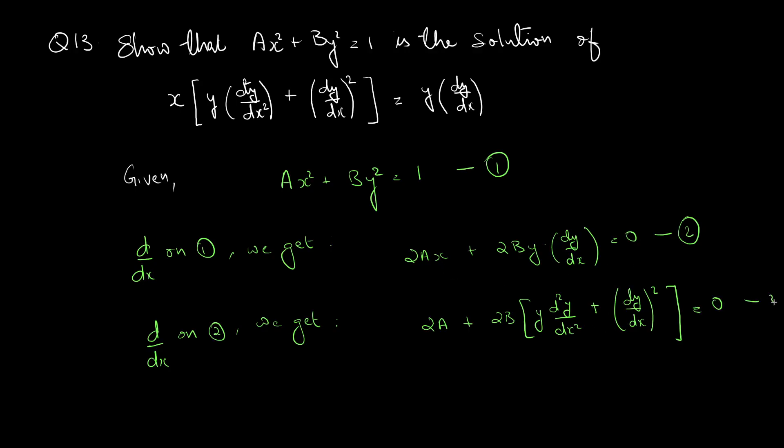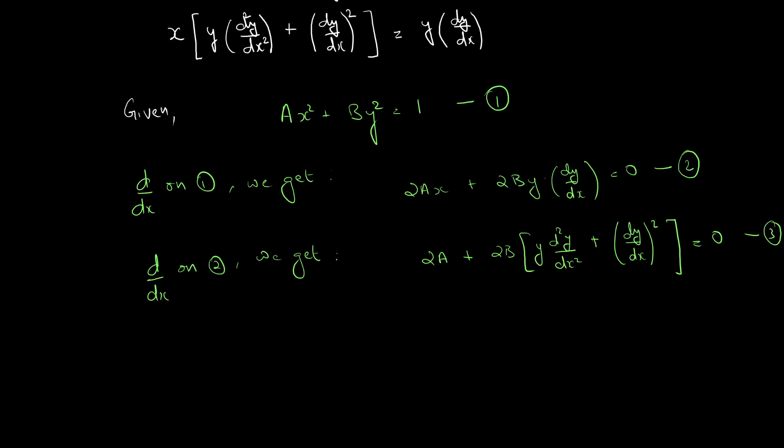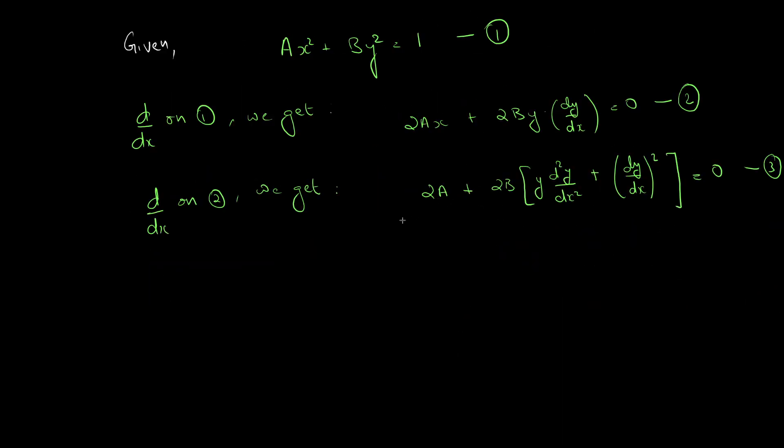Now, we have three equations here: 1, 2, 3. We need to eliminate these constants. We can multiply x to both sides of equation 3.